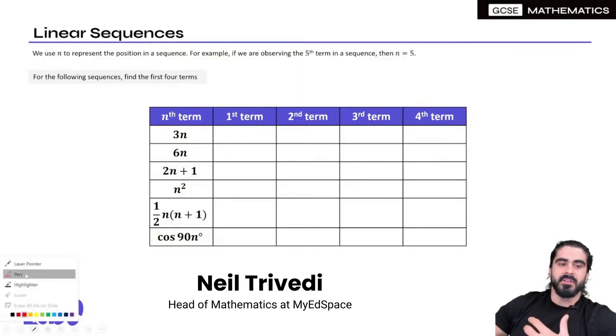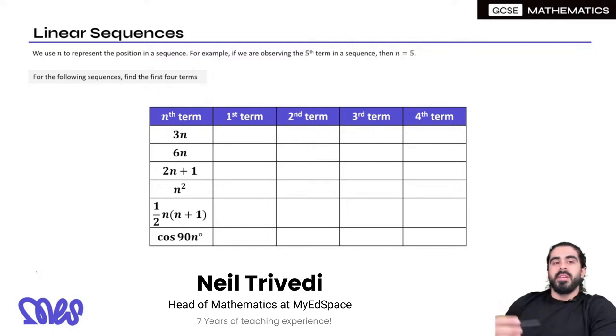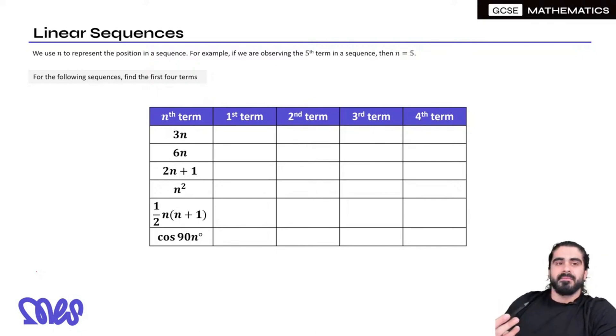The first thing we have to understand is, what is a sequence? We use the letter N to represent the position in a sequence. For example, if we're observing the fifth term in a sequence of numbers, then N is 5. So for the following sequences, just find the first four terms.